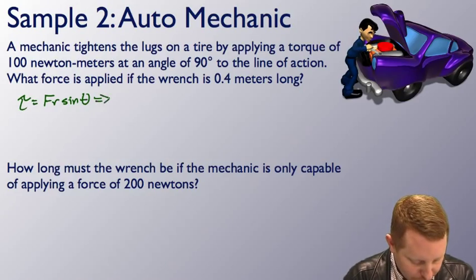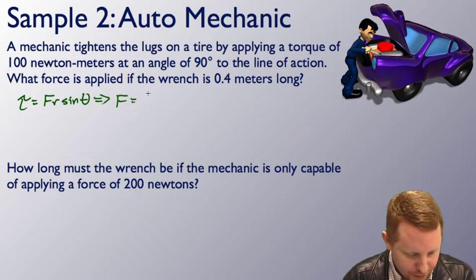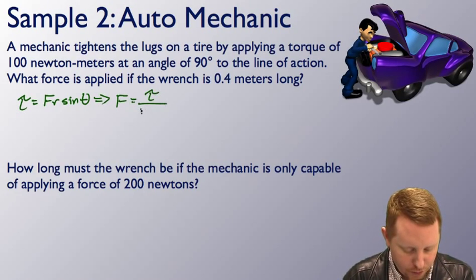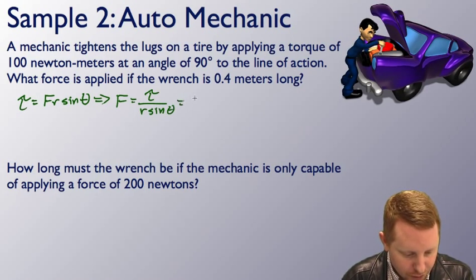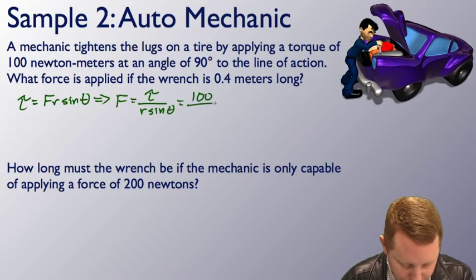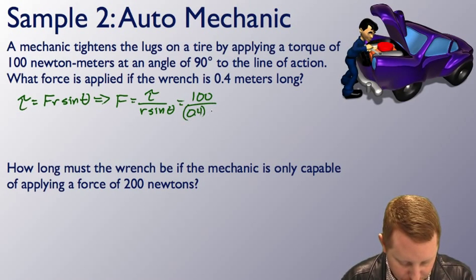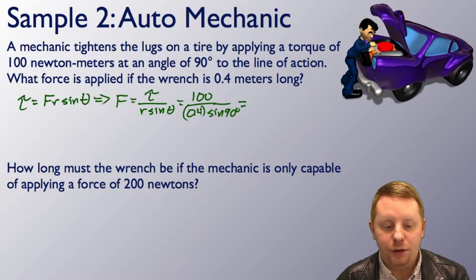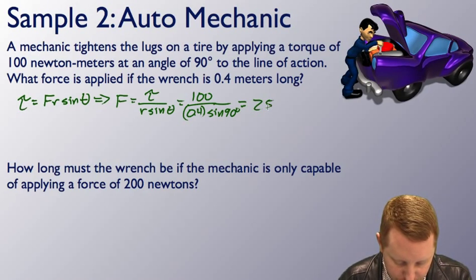Torque is FR sine theta, which implies that the force must be equal to torque over R sine theta, which is going to be 100 newton-meters divided by 0.4 meters, our lever arm, times the sine of 90 degrees. Sine of 90 degrees is 1, so that's just 100 over 0.4, or 250 newtons.